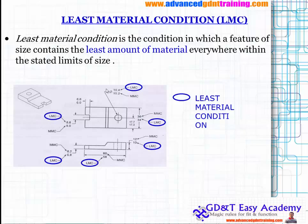In case of LMC, consider this particular slot — which dimension gives you MMC? The smaller the diameter, the more it weighs, so the smaller dimension is MMC. For this hole, the least material condition occurs when you have the larger diameter — as you keep increasing it, it will weigh less, which you can relate to the least material condition.